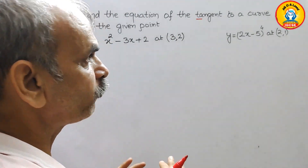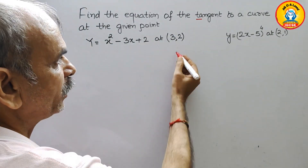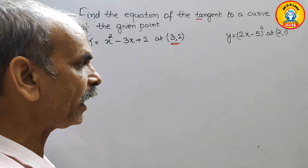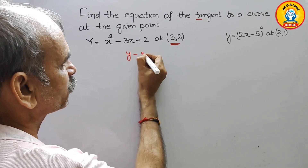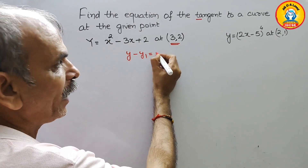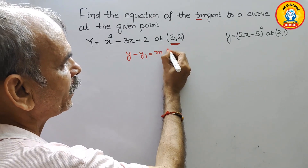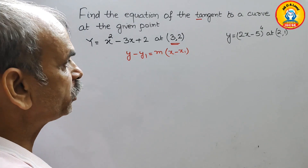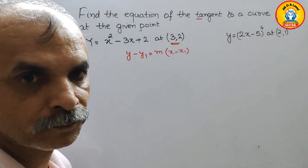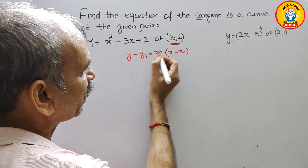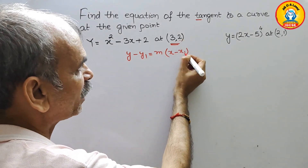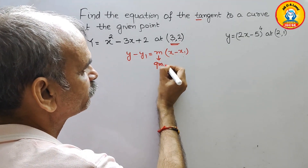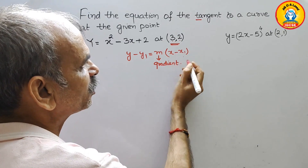The formula is straightforward — it uses a single point. The formula is y minus y1 is equal to m times x minus x1. This is the formula for the equation, where y1 and x1 are the given point coordinates, and m is nothing but your gradient, or you can say the slope.